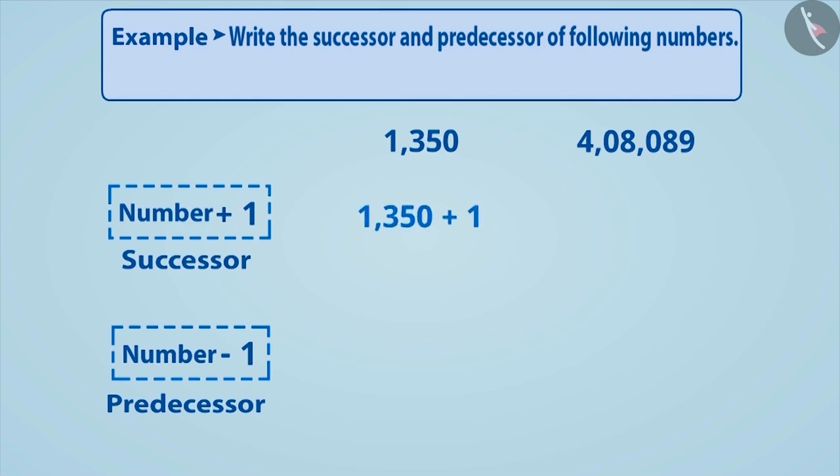In this way, by adding 1 to 1350, we get its successor 1351, and by subtracting 1 from it, we get its predecessor 1349.